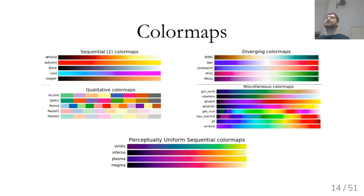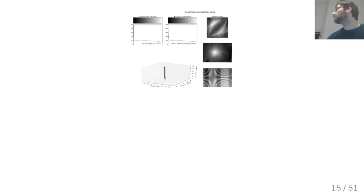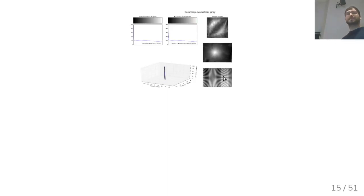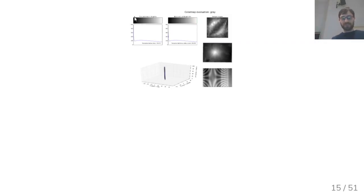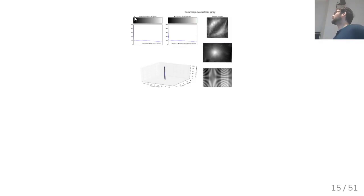Color maps are particularly important for heat maps, where a 2D array is visualized with each pixel representing a number. Here's a comparison of the JET color map on the left — formerly the default in Matplotlib — versus Viridis on the right, which is the default since Matplotlib 2.0. With JET, you can see apparent contours around the red and yellow regions that are not actually in the original data. One area looks like a clear ring with JET, but that ring disappears with Viridis.